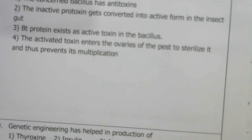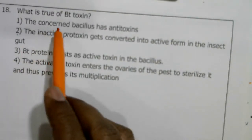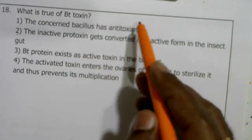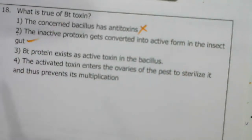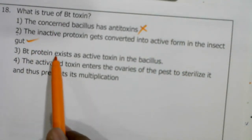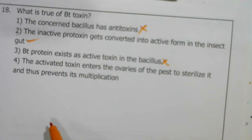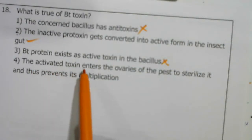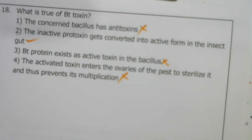What is true of Bt toxins? The inactive protoxin gets converted into active form in the insect gut — correct. The concerned Bacillus has anti-toxins — wrong. Bt protein exists as active toxin in Bacillus — wrong, because if it existed in active form, the bacteria itself would be killed. The activated toxin enters the ovaries of the pest to sterilize it — also wrong. The toxin binds to midgut epithelial cells.